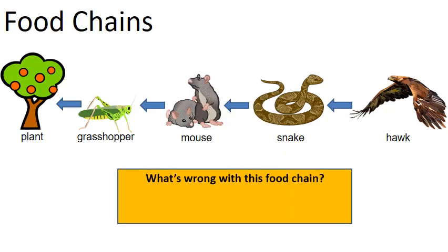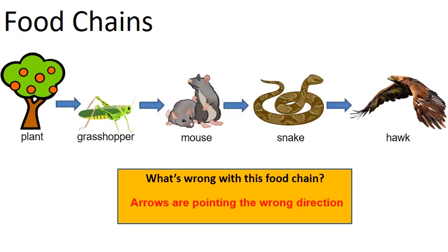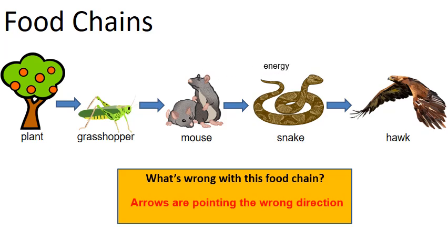When looking at a food chain, the arrows must point in the correct direction — showing the direction that energy flows. The arrow goes from the mouse to the snake because energy that was in the mouse's body is being transferred to the snake when the snake eats the mouse. Make sure you know which direction the arrow is pointing: it points in the direction that energy flows.